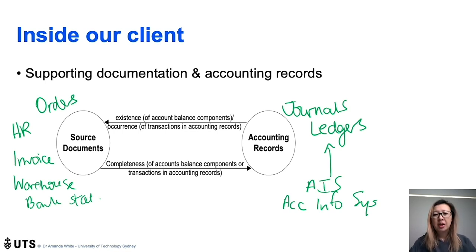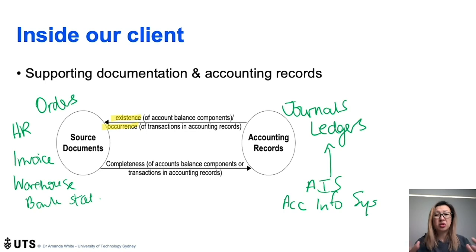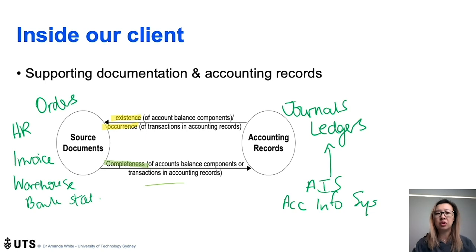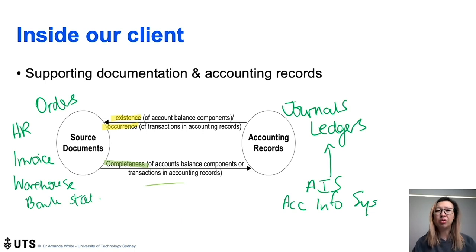Going backwards — is everything in our accounting records really supported by source documents? That's the assertion of existence and occurrence. Going the other direction — if everything in our source documents is recorded in the accounting records — that's the completeness assertion. We also have other assertions: is everything recorded at the right value, in the right accounting period, using the right journal entries? The crux is making sure that everything in the books really did happen, and that everything in our original documentation has been recorded in the accounting.